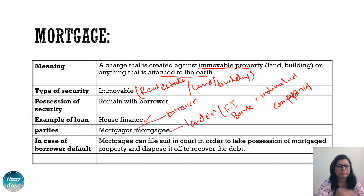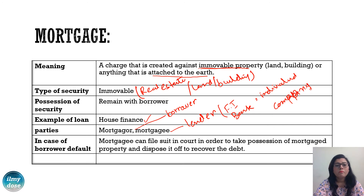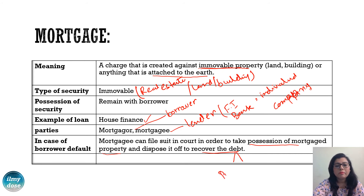In case of borrower default — if the mortgager defaults — what action will be taken by the mortgagee? The mortgagee can file a suit in court in order to take possession of the mortgaged property and dispose of it to recover the debt. The debt has two parts: the principal amount and the interest.